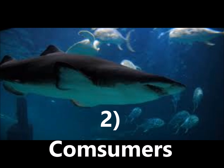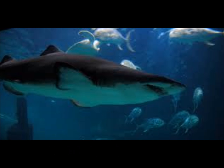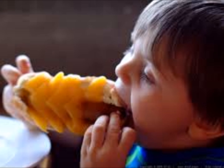Number two: Consumers. Consumers in the ecosystem are the animals. They consume or eat things like other animals or plants. Examples of consumers are cats, sharks, tarantulas, or bunnies. There are five major types of consumers: herbivores, carnivores, omnivores, parasites, and scavengers. Stay tuned for our next video which will tell you more about these consumers.